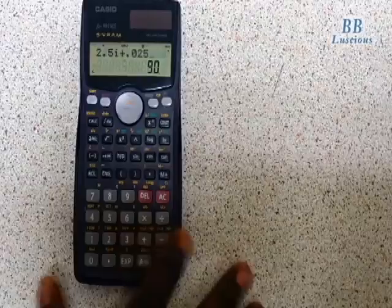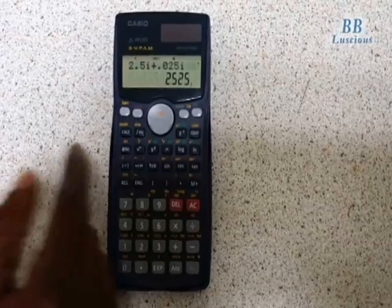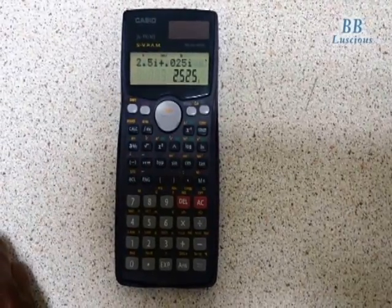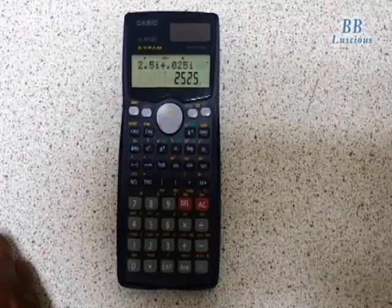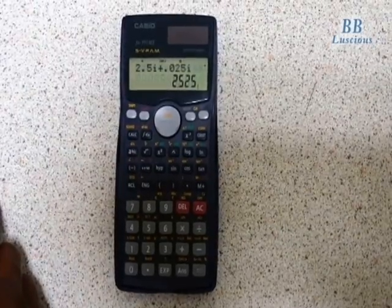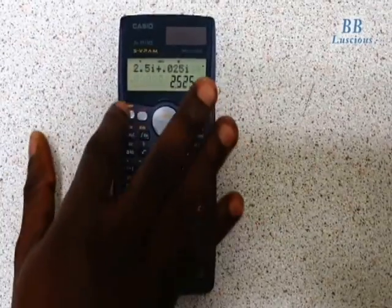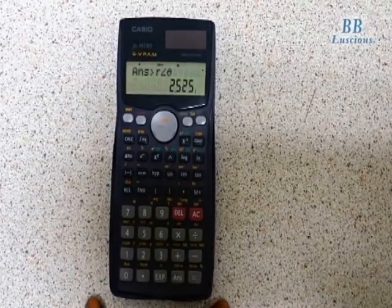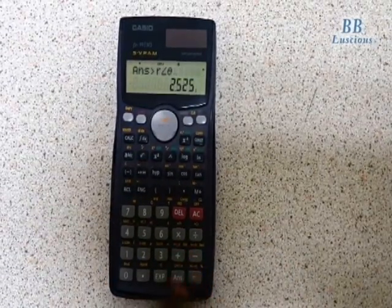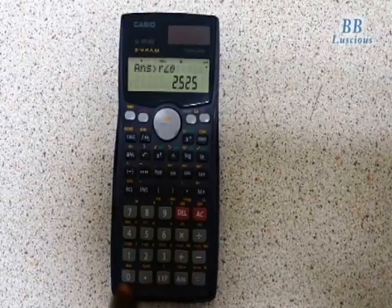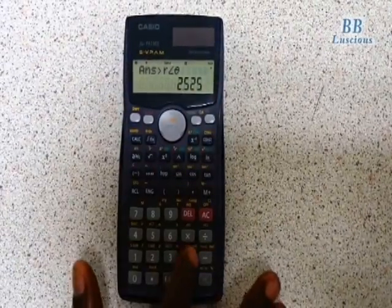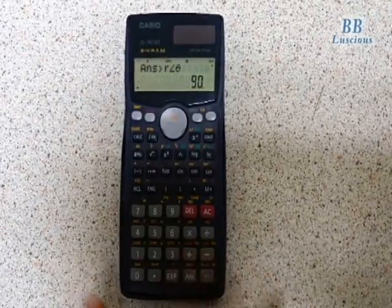2.5i plus 0.025i gives you 2.525i. You press Shift Angle - your answer should be in imaginary form - and then Shift Answer for the angle, which is still 90 degrees.